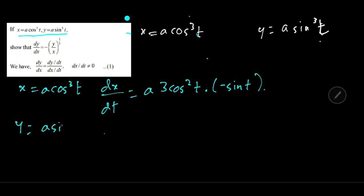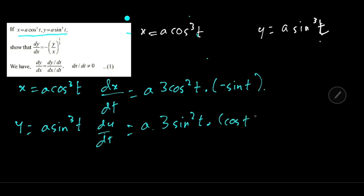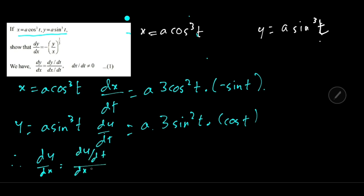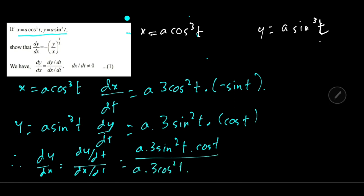For y equal to a sin cubed t, dy by dt is equal to a times 3 sin squared t into the derivative of sin t, which is cos t. Therefore dy by dx equals dy by dt upon dx by dt, which is a into 3 sin squared t into cos t upon a into 3 cos squared t into minus sin t.